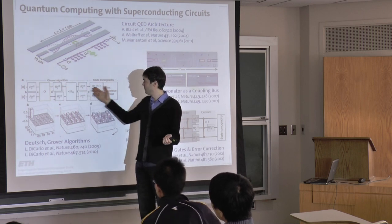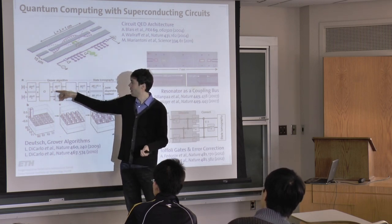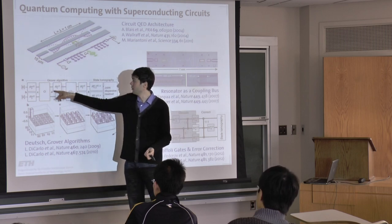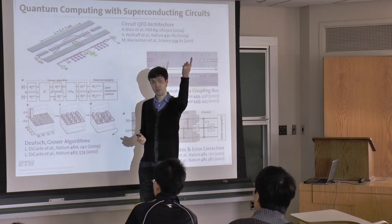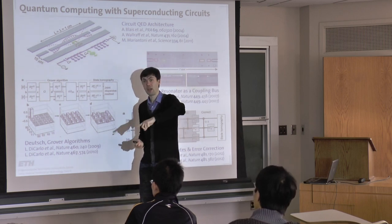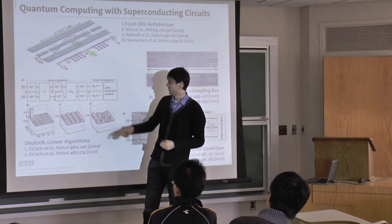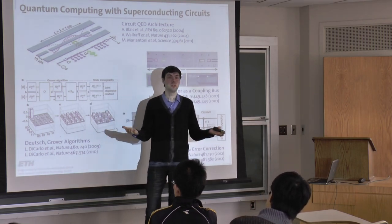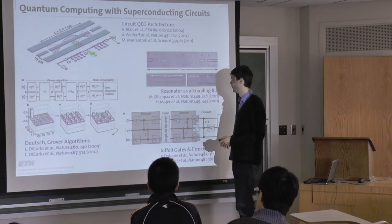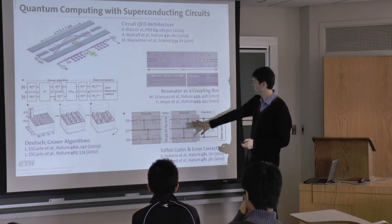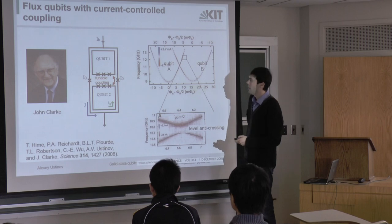In these algorithm diagrams, the horizontal lines represent qubits and the boxes are operations on qubits. Single qubit boxes are typically pulses — for example a pi pulse to rotate the spin from up to down, or a pi-over-2 pulse to create a superposition of up and down. The double qubit boxes are what we're going to discuss today: coupling boxes. At the end there's always a readout. People also run algorithms on more than two qubits — three qubits and beyond.